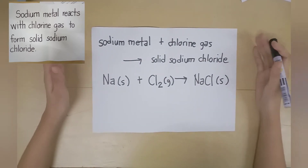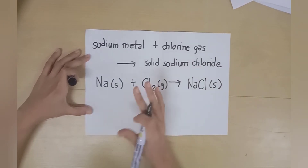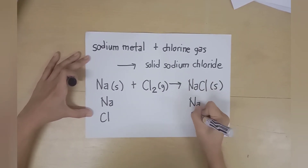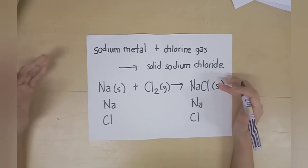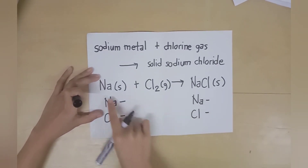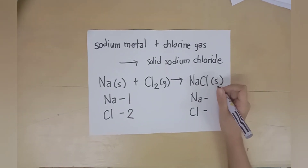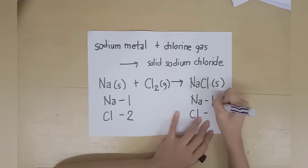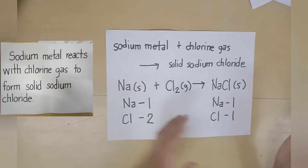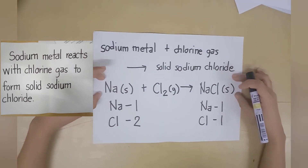After writing the chemical equation of this reaction, we need to identify the different elements involved. On the reactant and product sides, we have Na and Cl. Next, after identifying the elements, we need to count the number of atoms of each element. On the reactant side, sodium has one atom, and Cl has two atoms. On the product side, we have one atom for sodium and one atom for Cl. So we have one sodium atom and two Cl atoms on the reactant side — this chemical equation is still unbalanced.